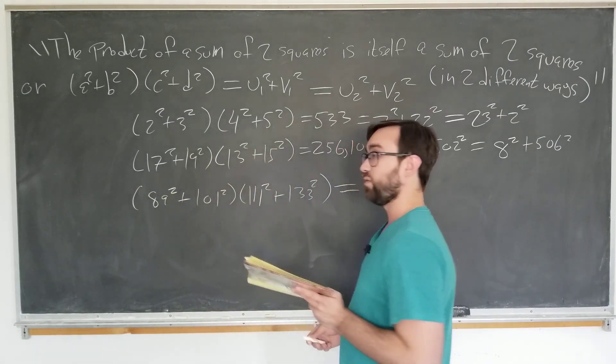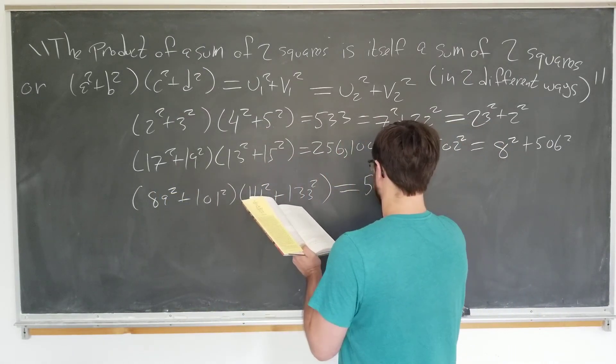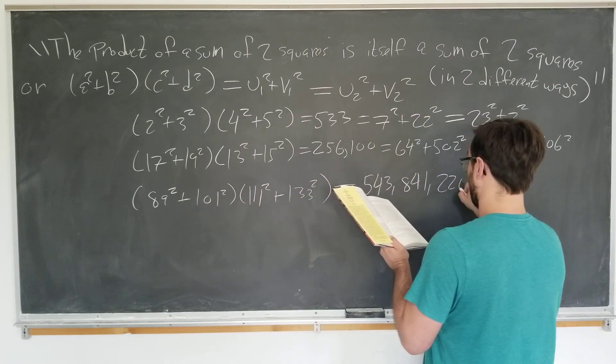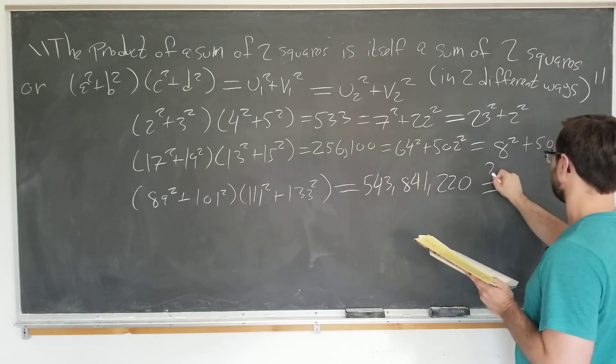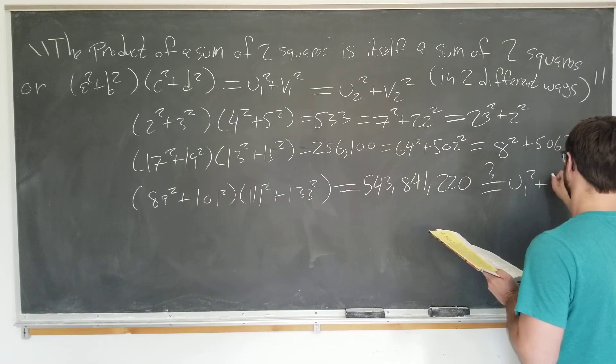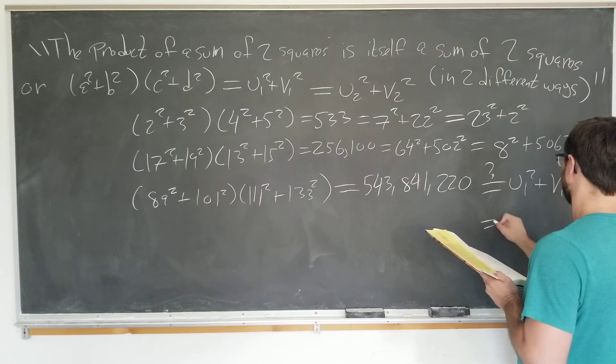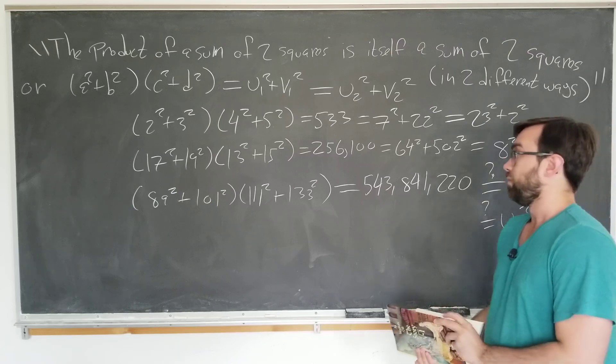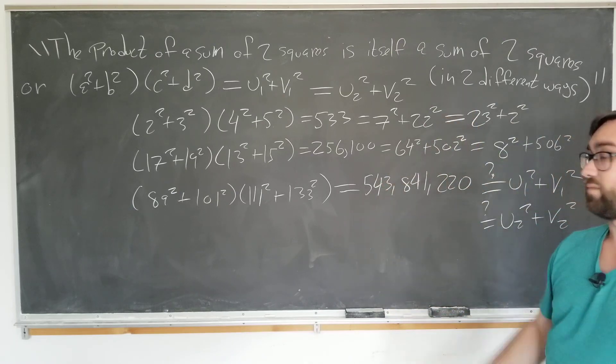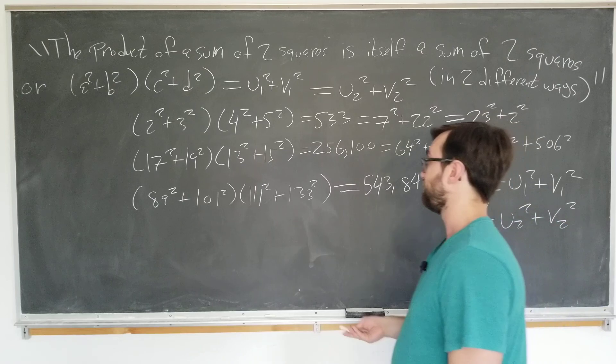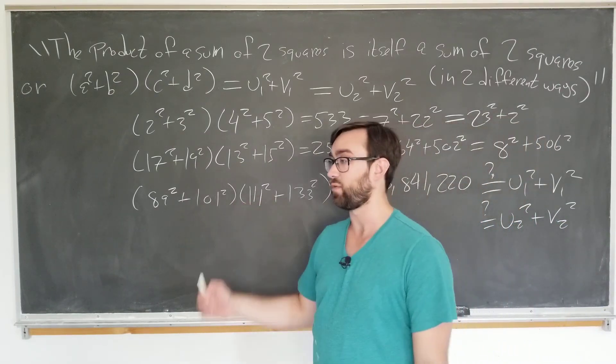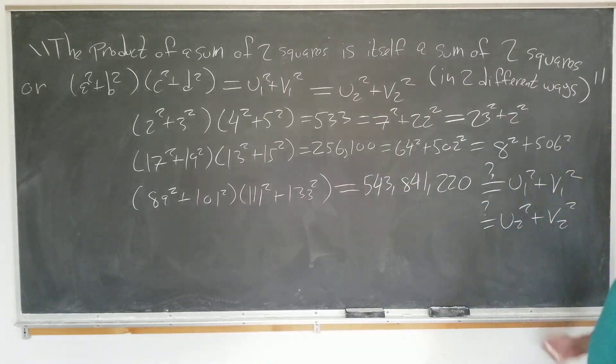This is 543,841,220. And we want to express this as some U1 squared plus V1 squared and U2 squared plus V2 squared. We're assuming that we found the other two simply by brute force calculation. The question is, how do we find U1, V1, U2, and V2?